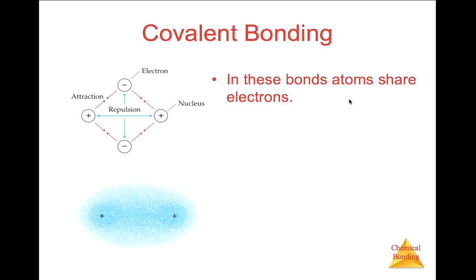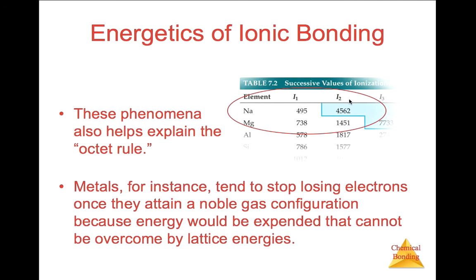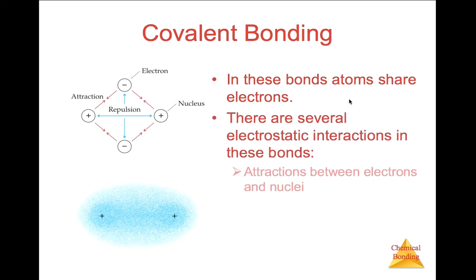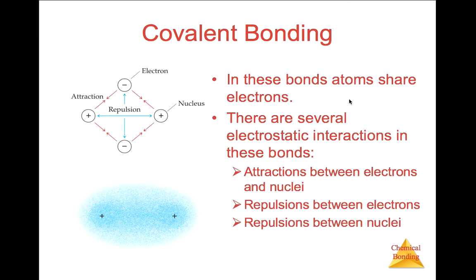Now we move on to the main time-consuming portion of the chapter. Ionic bonding happens between a metal and a nonmetal, a metal and a polyatomic ion, or two polyatomic ions. Now we focus on covalent bonding, which occurs between nonmetals, and you must be able to identify them. In these bonds, atoms share electrons, and there are several electrostatic interactions: attraction between electrons and nuclei, repulsions between the electrons, and repulsions between the nuclei.